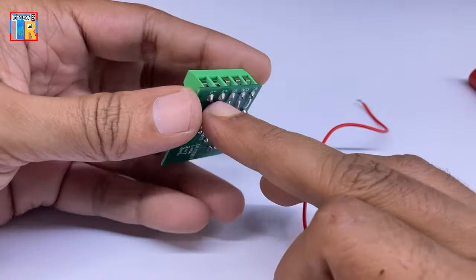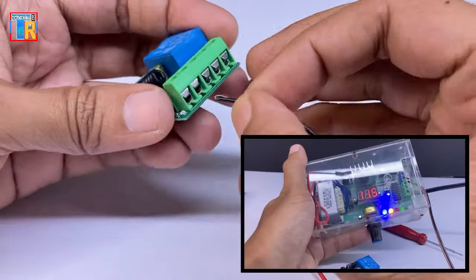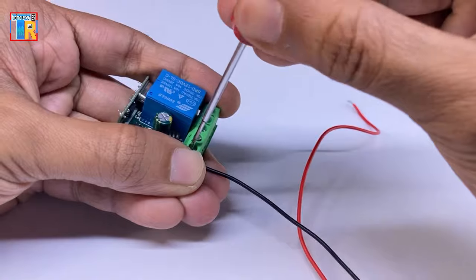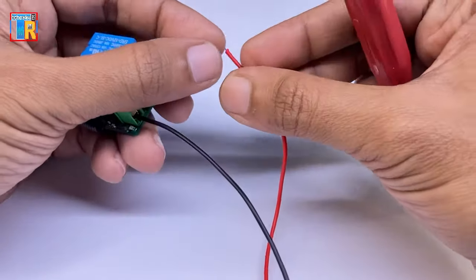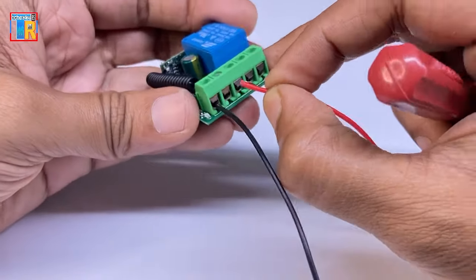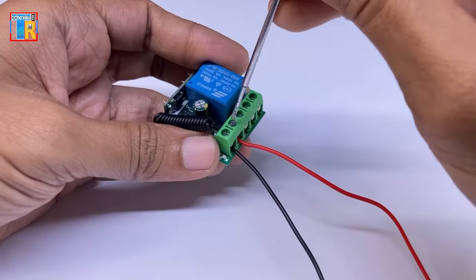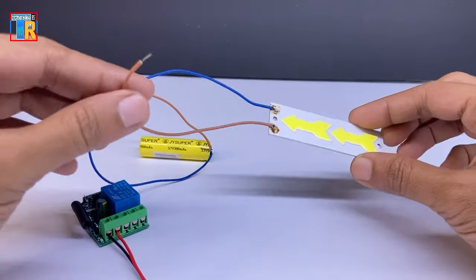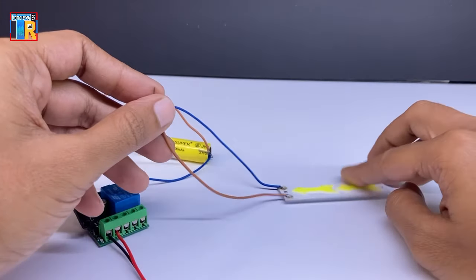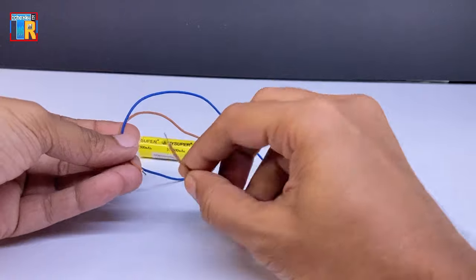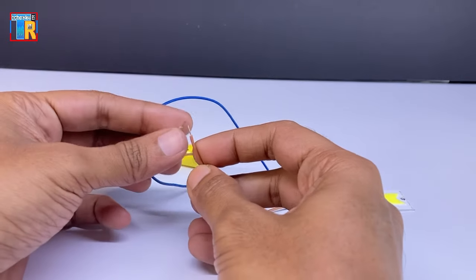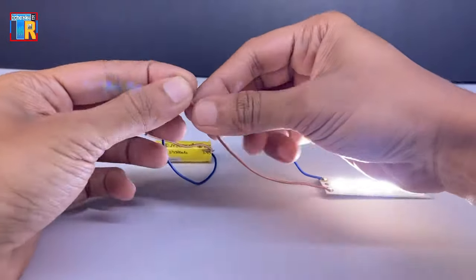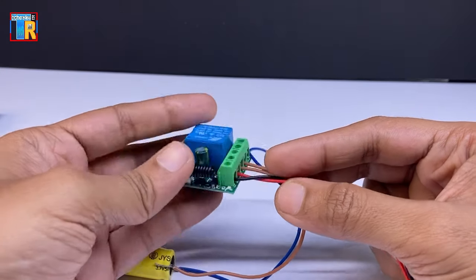I am connecting the power supply input points with two wires and also connecting a 12 volt power supply. I have set up this LED arrangement to demonstrate the relay's on and off functions clearly. This is a simple switch with battery connections. The LED is connected to the relay.